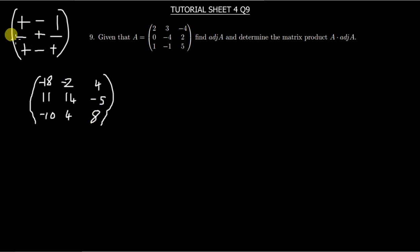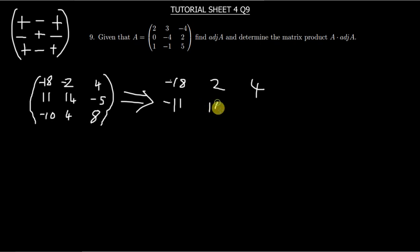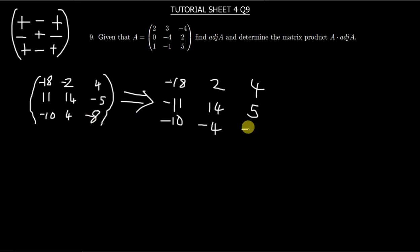Now it's a matter of inserting the cofactor signs. The positive sign goes with the first number, the negative with the second, and positive with the third. So positive times negative 18 gives negative 18; negative times negative 2 gives positive 2; positive times 4 gives 4; negative times 11 gives negative 11; then 14; negative times negative 5 gives positive 5; then negative 10; negative 4; and — correction — this should be negative 8.